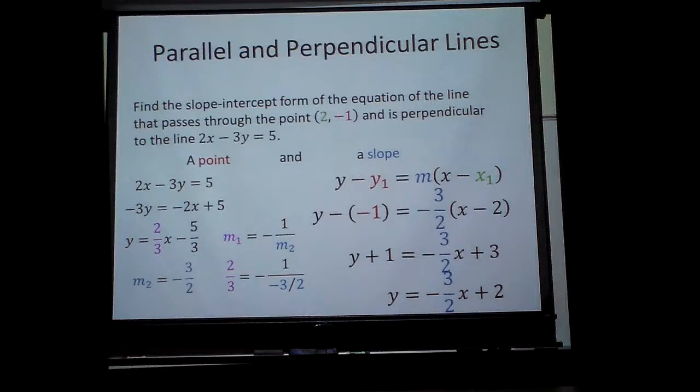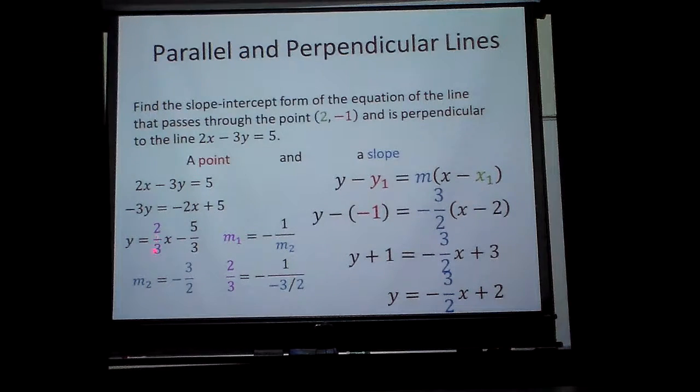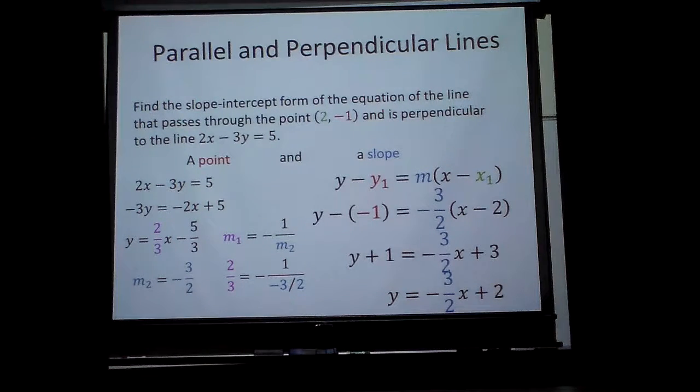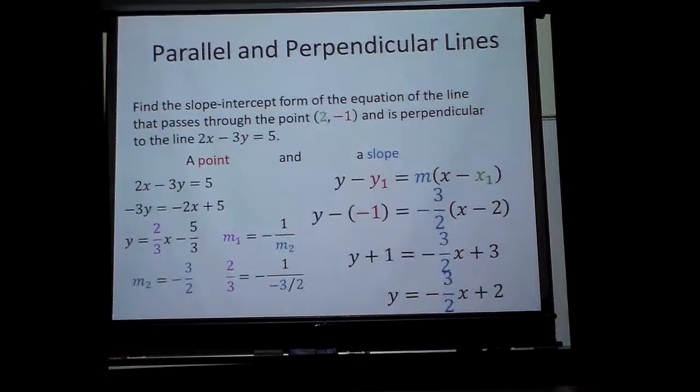So to find the parallel slope, use the two thirds. To find the perpendicular one, use the negative reciprocal. Flip it and make it negative. Alright? That sounds pretty cool. Thank you.